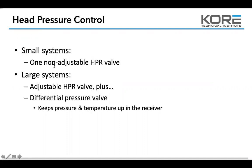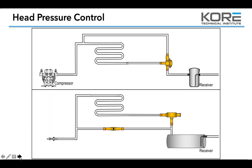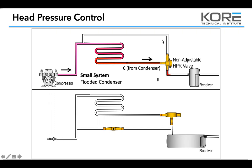Let's talk about head pressure control. On small systems you're going to run a non-adjustable head pressure regulating valve — a headmaster, as we call it in the field. Large systems use an adjustable head pressure regulating valve plus a differential pressure valve. The headmaster has a charge in its head — an inert gas like nitrogen — that always opposes the system pressure. As long as the condenser pressure overcomes that diaphragm, refrigerant keeps feeding through. As the pressure drops through the condenser, it pushes back on that line and starts filling the condenser with liquid, reducing the condensing surface within the condenser, which raises the pressure.